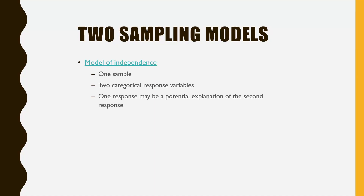This should sound a lot like correlation. Think about correlation: you take a single sample, measure individuals on two variables, and see if those variables are related — could one variable possibly be an explanation of another? That's why we expand to simple linear regression. If we think one variable may not only be associated with the other but could potentially explain at least part of the variation in it, you're actually using a model of independence.